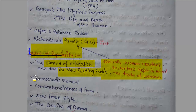Other causes of the popularity of the novel include democratic movements — women were getting their rights — and a new, comprehensive prose style that people were interested in. The decline of drama also contributed, as drama had been the most popular form of literature in the Renaissance, but now the novel form was what people preferred.